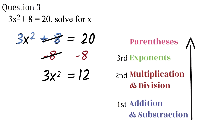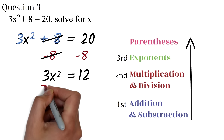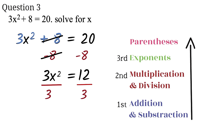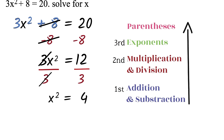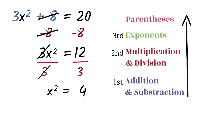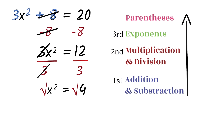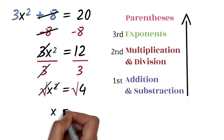Next, we get rid of the multiplication by 3 by performing the opposite operation — we divide both sides by 3. The 3 will cancel out. 12 divided by 3 is 4, so now we have x squared equals 4. We finally get rid of the exponent 2 by performing the opposite operation. The opposite of squaring is taking the square root. We find the square root of both sides. The square root cancels out the square. The square root of 4 is 2. Therefore, x equals 2.